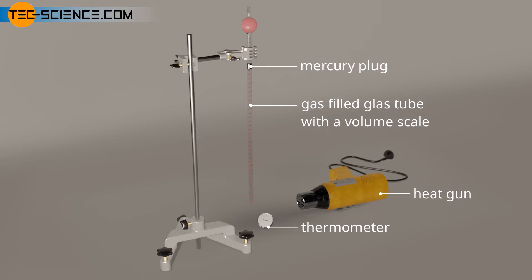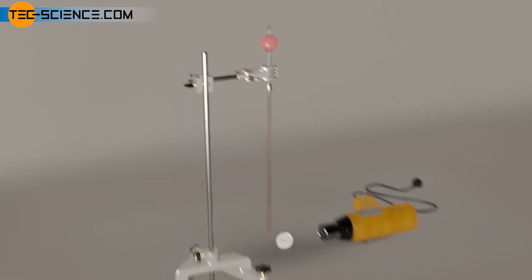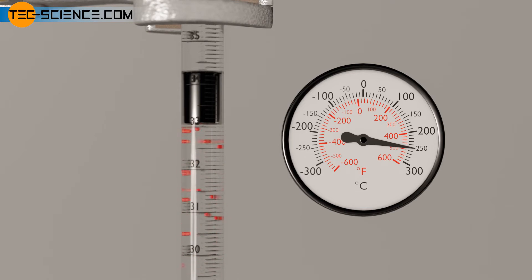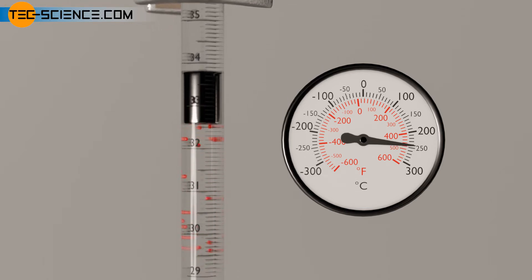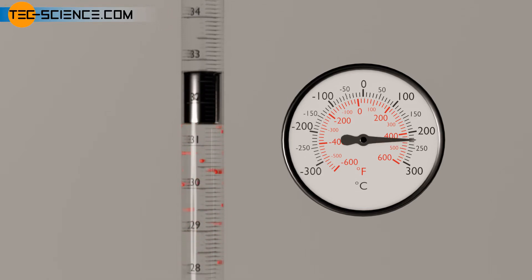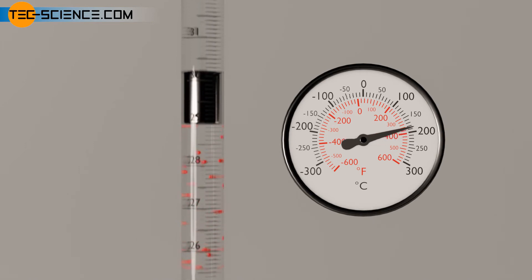In this experiment, it makes sense to first heat the gas to the maximum and to record the temperatures and volumes during cooling, as the cooling is much more uniform than the punctual heating with the heat gun. This ensures that the entire gas has a uniform temperature and does not only become hot here and there.